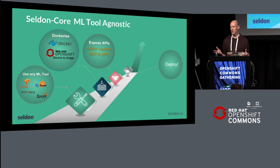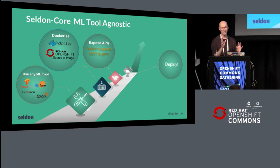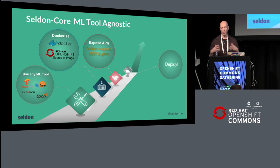What we're trying to do is allow machine learning data scientists to use any toolkits — Spark, TensorFlow, Scikit-learn. We want them to be able to use any toolkit they're using now, and we just manage the runtime prediction for their models. For that, they just need to do two things: dockerize their runtime component and expose it using our REST and gRPC APIs. We want to make it really easy for them to do that.